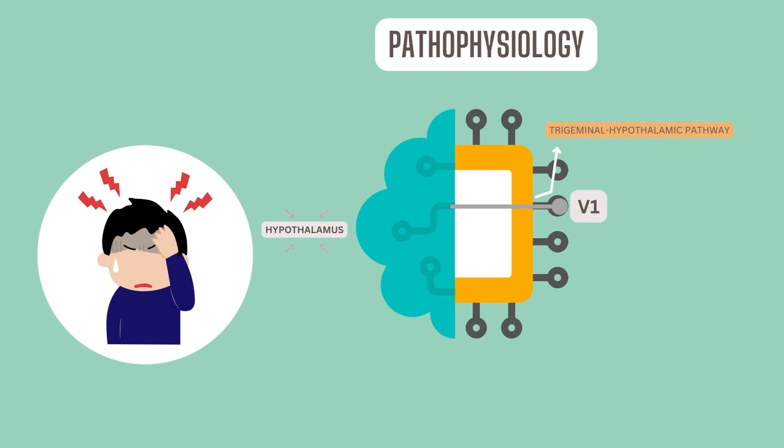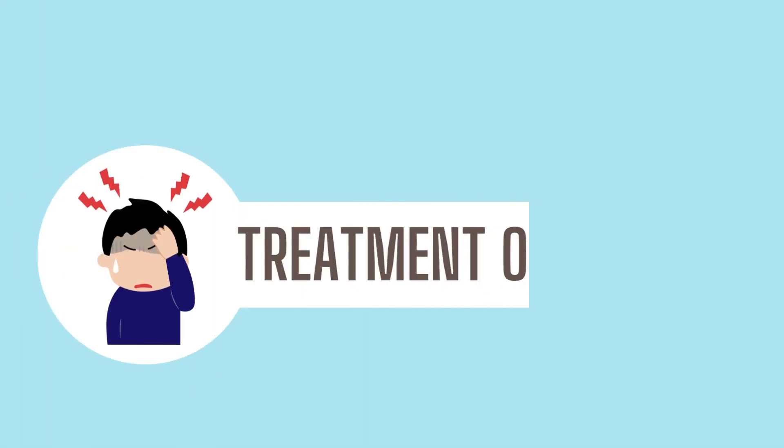Severe unilateral pain is mediated by activation of the first division of the trigeminal nerve. The autonomic symptoms associated with cluster headache—lacrimation, miosis, and sweating—are thought to be due to parasympathetic outflow from the superior salivatory nucleus via the pterygopalatine ganglion.